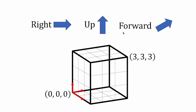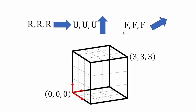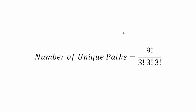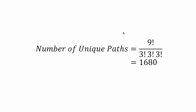Finally, going back to our original three-dimensional problem, we have three moves: right, up, and forward. Our destination is located three right, three up, and three forward moves away from us. Hence, the number of paths is the permutation of nine objects where there are three items that each repeat three times. The number of unique paths equals nine factorial divided by three factorial, divided by three factorial, and divided by three factorial — which gives us 1,680.